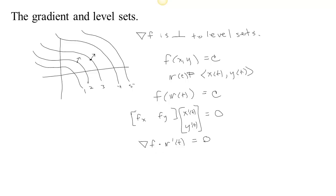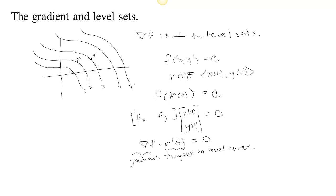When the dot product of two vectors is 0, it means the two vectors are orthogonal. So r'(t) is the tangent to the level curve, and the gradient is perpendicular to that tangent — the gradient is perpendicular to the level sets. We could do a similar argument for a function that had three inputs and one output, except we would have a parameterization of those level sets, and we could see that the gradient was perpendicular to the normal of those level sets.